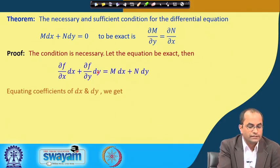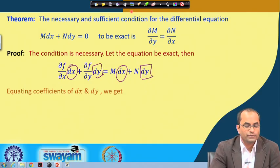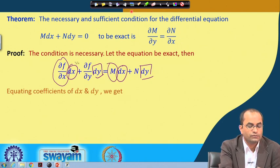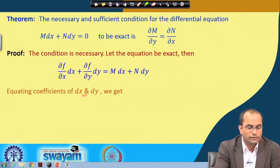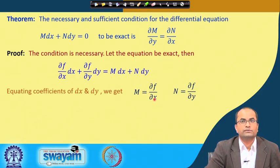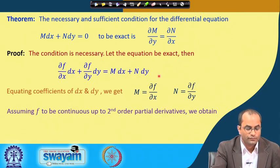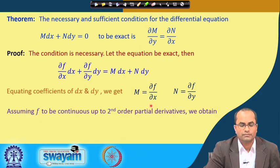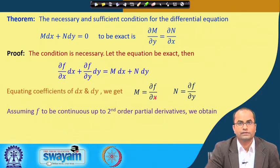Equating coefficients of dx and dy, we get ∂f/∂x = M and ∂f/∂y = N. Now we assume f to be continuous up to second-order partial derivatives, which is sufficient to assume equality of the mixed second-order derivatives.